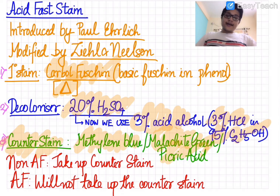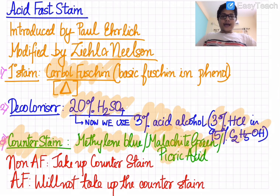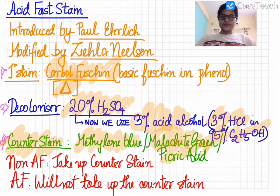We can also use malachite green or picric acid as the counter stain, and acetone as the decolorizer. An acid fast bacillus, due to the presence of mycolic acid in the cell wall, will not take up the counter stain — meaning it is not decolorized by the acid and hence is acid fast. Non-acid fast bacilli, after being decolorized, will take up the counter stain.